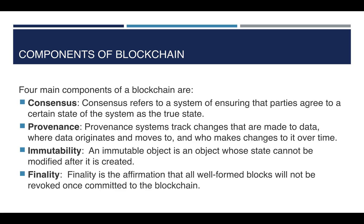What are the components of blockchain? There are four main components. First is consensus: a system of ensuring that parties agree to a certain state of the system as the true state. Second is provenance: a system that tracks changes made to data, where data originates and moves to, and who makes changes over time. Third is immutability: an object whose state cannot be modified after it is created. Fourth is finality: the affirmation that all well-formed blocks will not be revoked once committed to the blockchain.